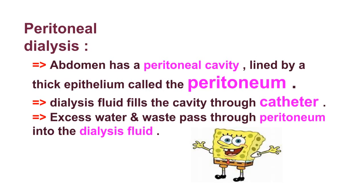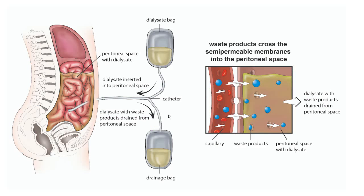Now let's see what peritoneal dialysis is. The abdomen has a peritoneal cavity lined by a thick epithelium called the peritoneum. Dialysis fluid fills the cavity through a catheter — a tube connecting to the body. Excess water and waste pass through the peritoneum into the dialysis fluid. Diagrammatically, you can see the peritoneal space with dialysate, and the dialysate bag. The dialysate is inserted into the peritoneal space through the catheter.